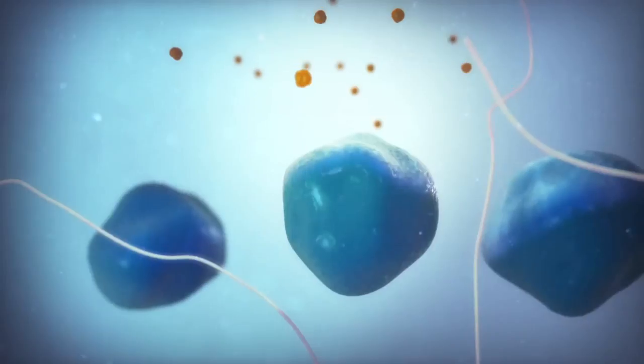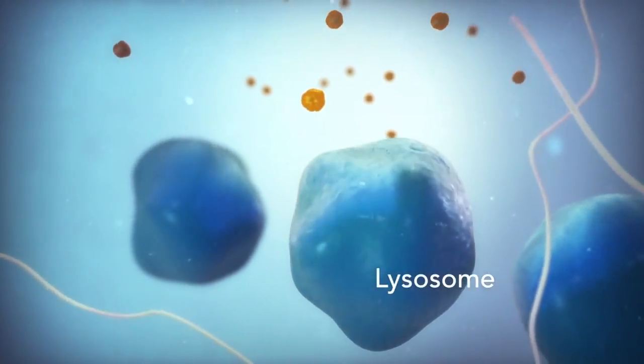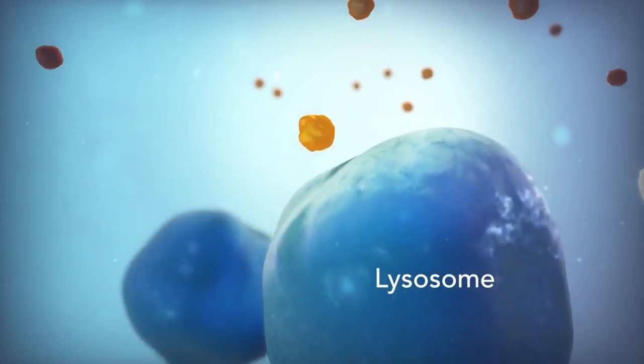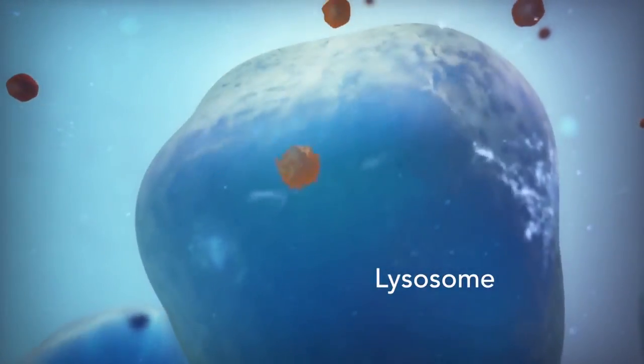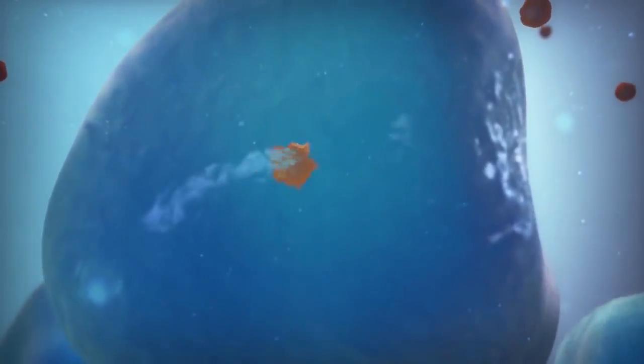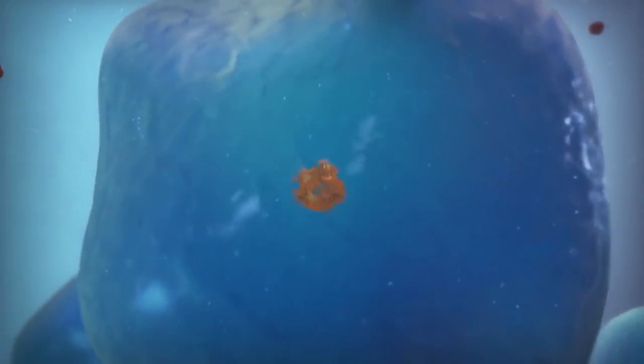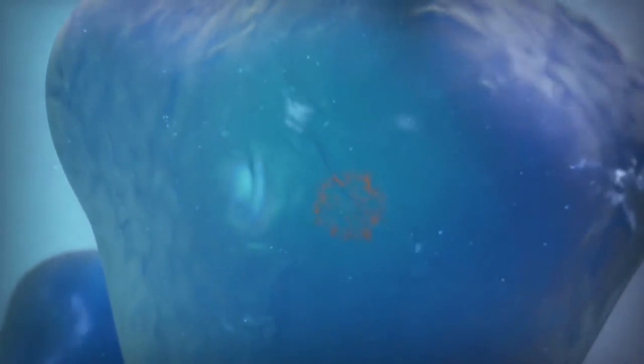Going back to the animal cell, you will see an organelle called a lysosome. Lysosomes are the garbage collectors that take in damaged or worn-out cell parts. They are filled with enzymes that break down this cellular debris.